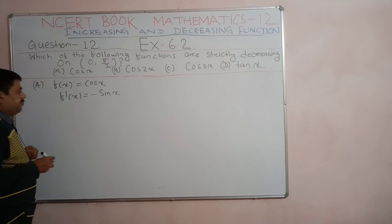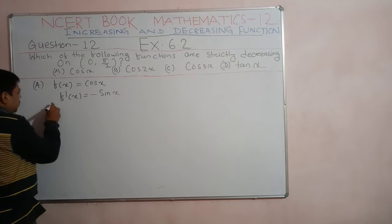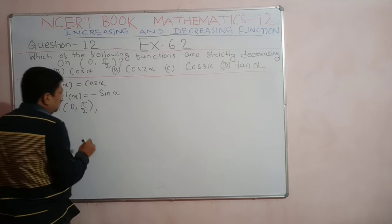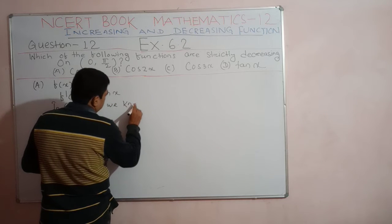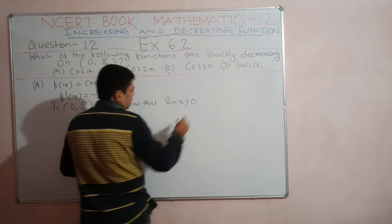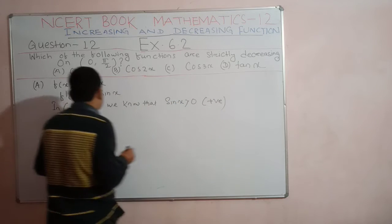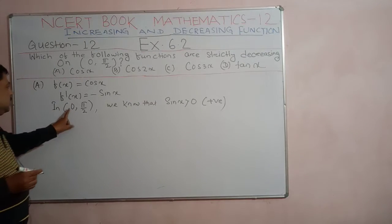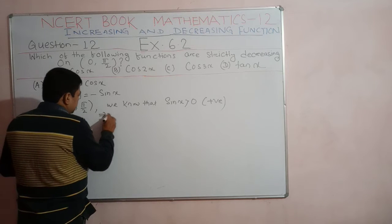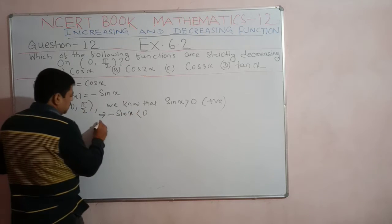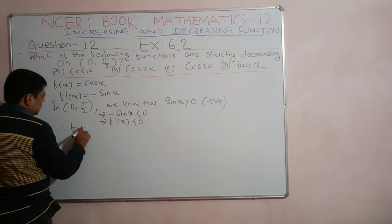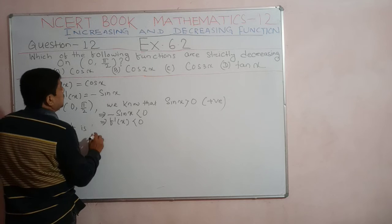In the open interval 0 to π/2, the angle lies in the first quadrant. In the first quadrant, sin x is greater than 0 — it is positive. That implies minus sin x is less than 0, which means f'(x) is less than 0. Hence f is strictly decreasing in the open interval 0 to π/2.